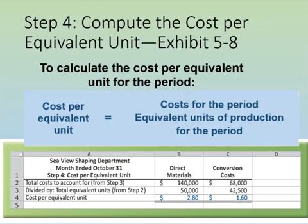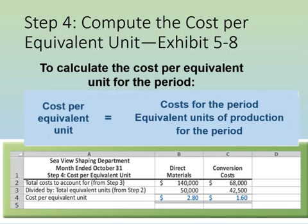Step four is to compute the cost per equivalent unit. The cost per equivalent unit is the total cost to be accounted for divided by the total equivalent units for the period. We must compute a separate cost per equivalent unit for each cost category. Managers also use this to determine how well they've controlled costs by comparing actual cost per equivalent unit to budgeted. In this case, the department incurred $2.80 of direct materials costs and $1.60 of conversion costs per equivalent unit.